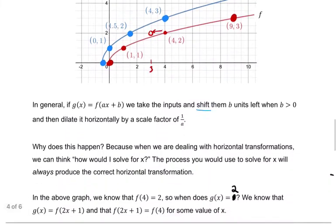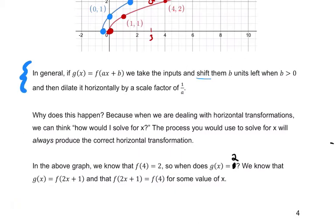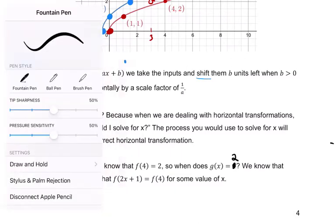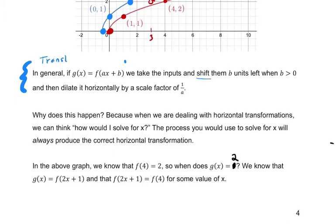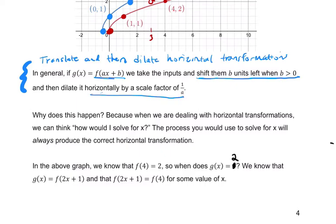So that's the way to do it. So in general, we translate and then dilate horizontal transformations when they're in this form right here. So when g of x equals f of ax plus b, that means we shift them, in this case, left b units when b is greater than 0, and to the right when b is less than 0, and then dilate horizontally by a scale factor of 1 over a. And then the reflection can happen before or after the dilation.